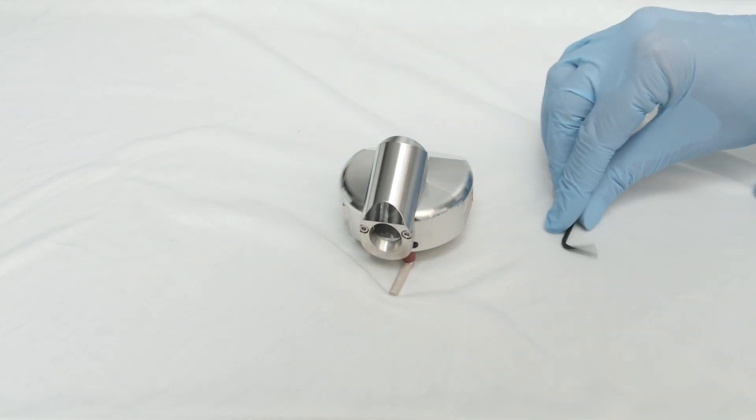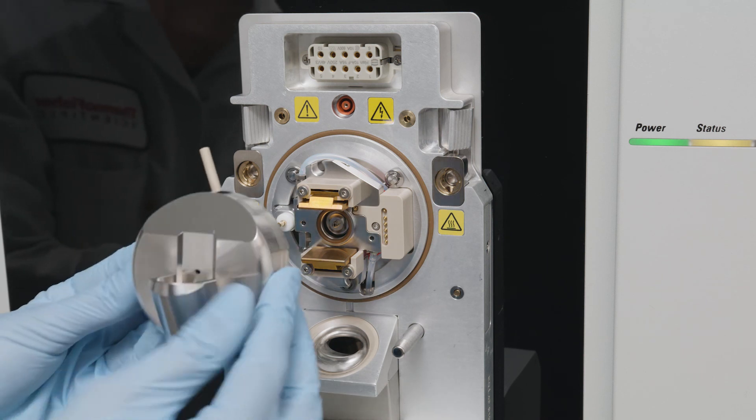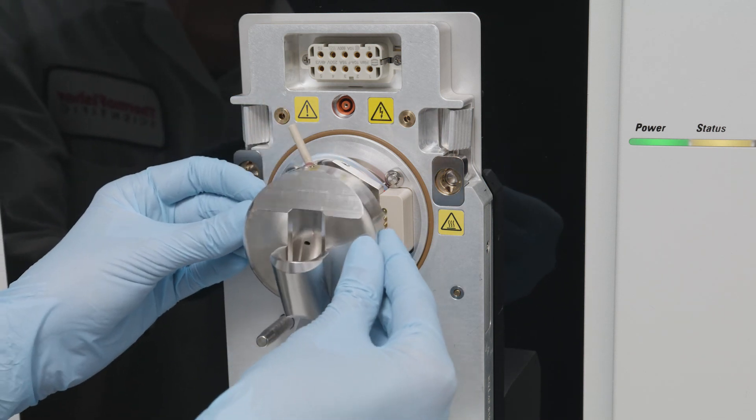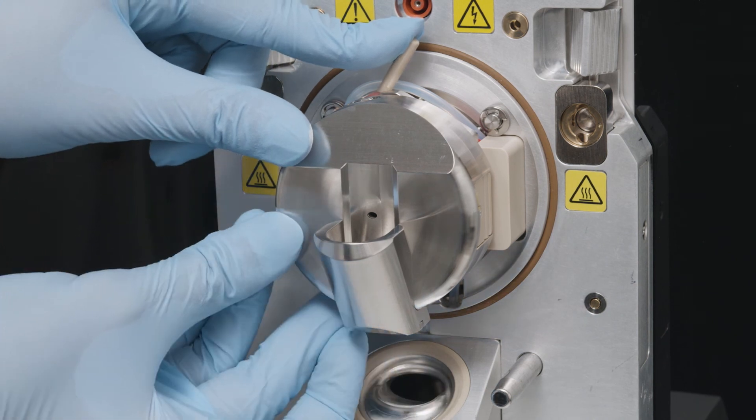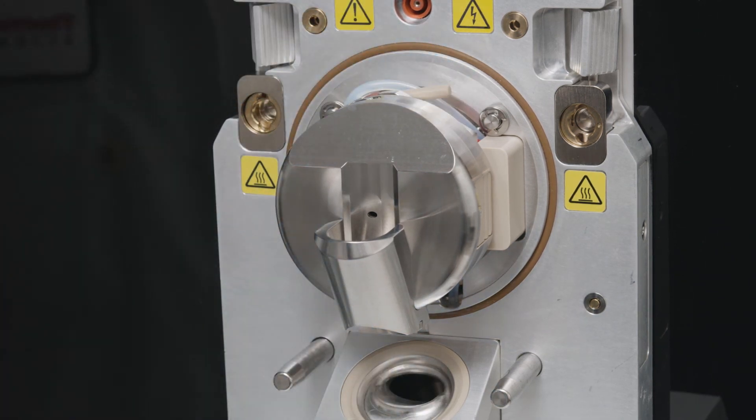Next, place the electrodes back on the FAIMS unit. Remember that a leak check and DV tune need to be performed after reinstalling the electrode assembly. Once they are complete, you are ready to run more samples using FAIMS.